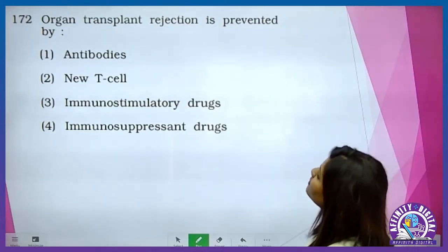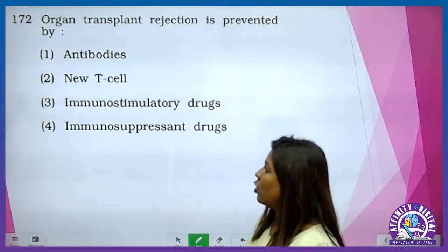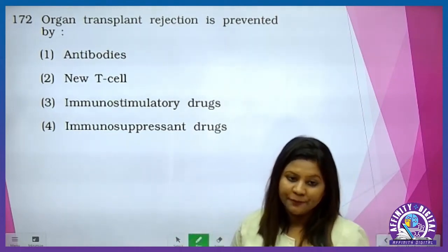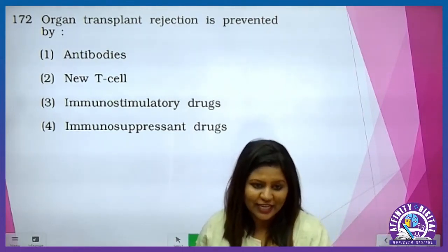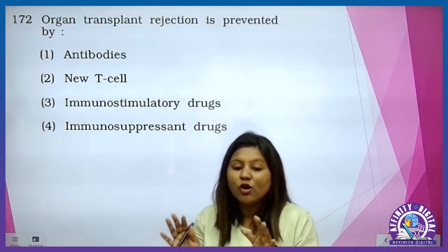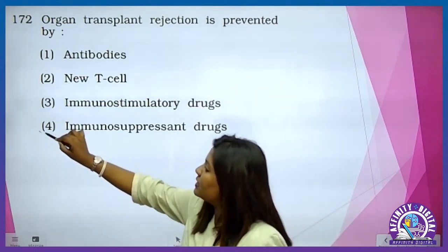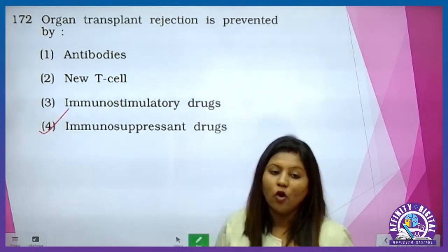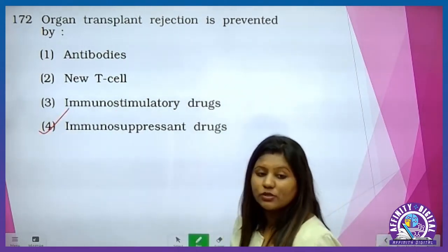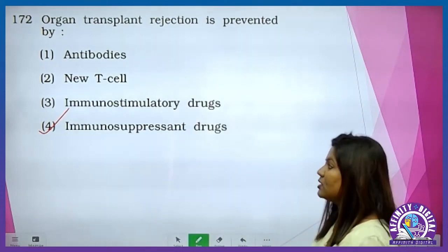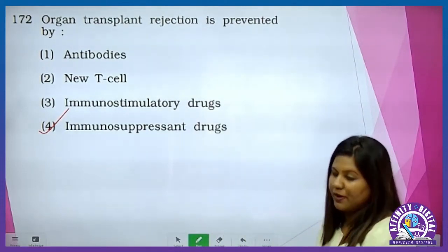Organ transplant rejection is prevented by: agar hum log organ transplant karne ke baad immune system ko suppress karke rakh paayein, then there is the possibility of organ acceptance. So that is the immunosuppressive drugs that are administered in that patient.